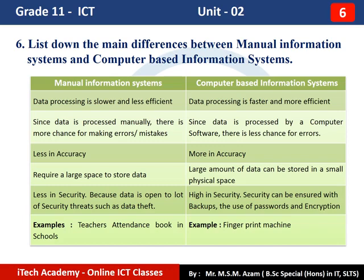An example of a manual information system is a teacher attendance book in a school, where teachers sign their attendance manually. The same school can also have a fingerprint machine to record attendance, which is an example of a computer-based information system.